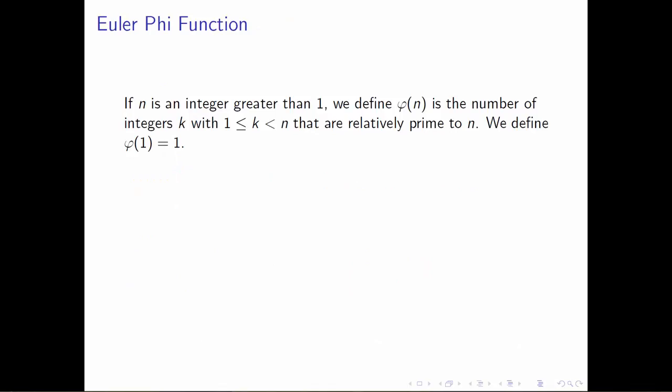As I said previously, we're very often asking ourselves how many generators a cyclic group has. We always know it has one, and in fact it's almost certainly going to have more than one. In order to determine the number of generators of a cyclic group, what we need to do is determine the order of the cyclic group and then count the number of positive integers less than the order that happen to be relatively prime to it.